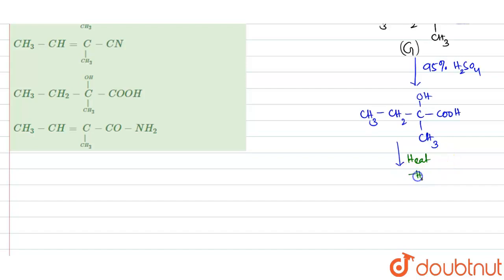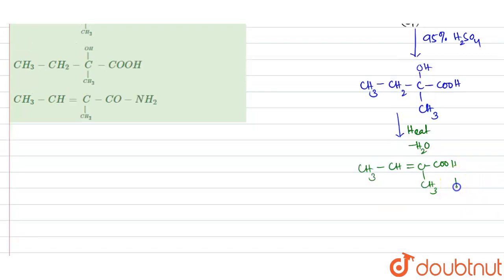dehydration takes place and water gets eliminated and we obtain this product CH3CH double bond C, COOH and here comes the CH3 group. So this is the final product H.